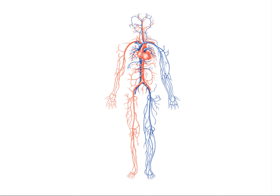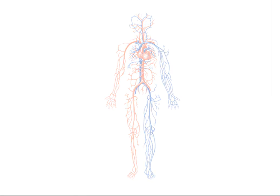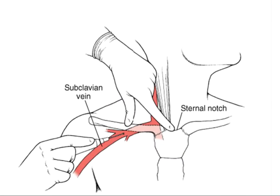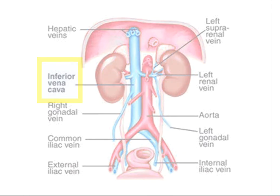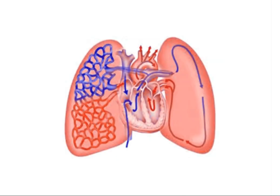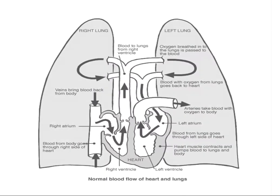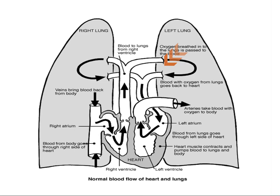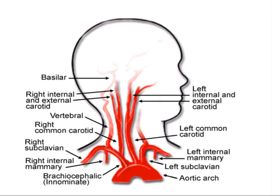Let's look at an example. Suppose you are asked to trace the path of blood from the arm to the head. Blood flows from the arm through the subclavian vein to the vena cava, which empties into the right atrium, to the right ventricle, to the pulmonary trunk, which splits into the pulmonary arteries delivering blood to the lungs. Then the pulmonary vein carries blood from the lungs to the left atrium, to the left ventricle, to the aorta, which finally carries blood through the carotid artery to the head.